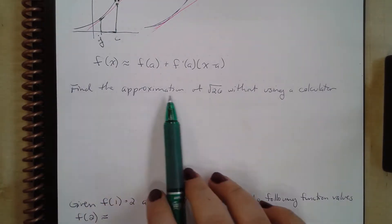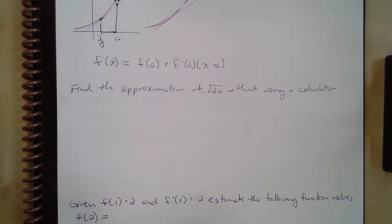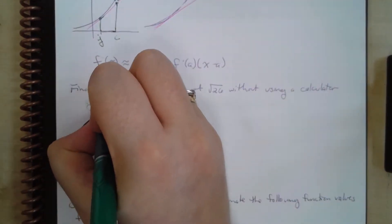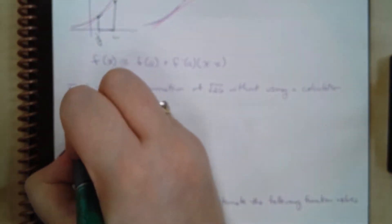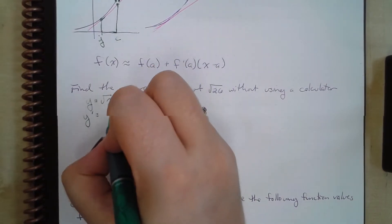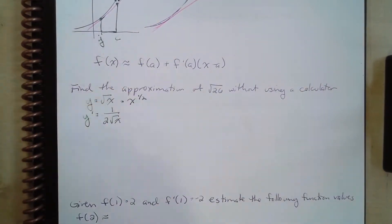We want to find the approximation of the square root of 26 without using a calculator. Well, I can write this as y equals the square root of x. That seems pretty basic. And y prime, in this case, I can rewrite this as x to the one half, is going to be 1 over 2 radical x.